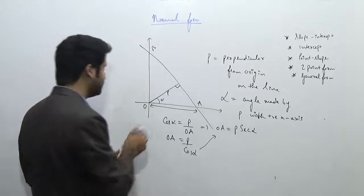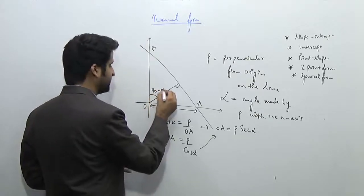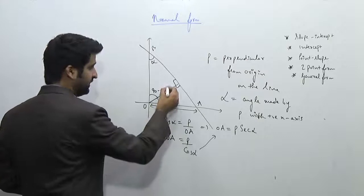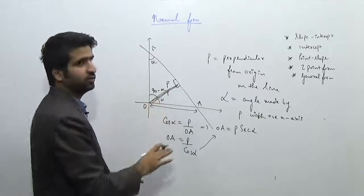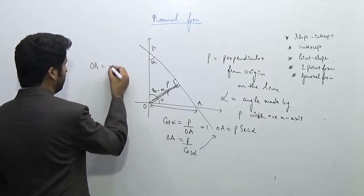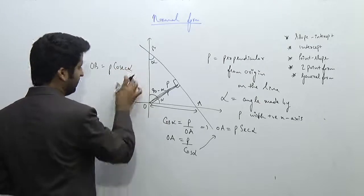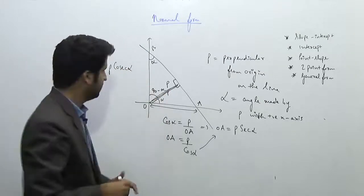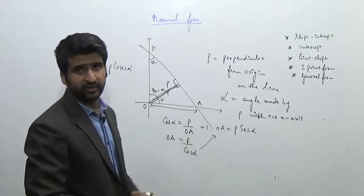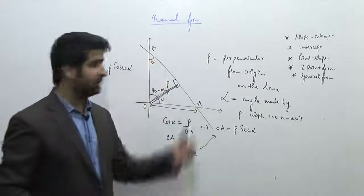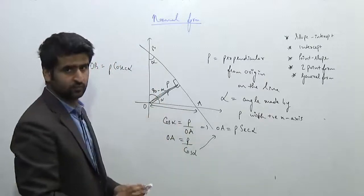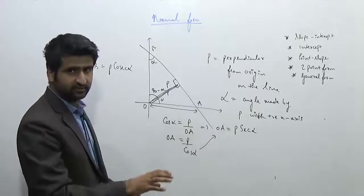Similarly, if we want to find the value of OB, this angle comes out to be 90 minus alpha, and this angle will be alpha. In this case, p is known, and OB comes out to be p·cosec α — this is simple trigonometry. Now we know two values: OA and OB. These are nothing but the intercepts made by the line on the x-axis and y-axis — OA is the x-intercept and OB is the y-intercept.